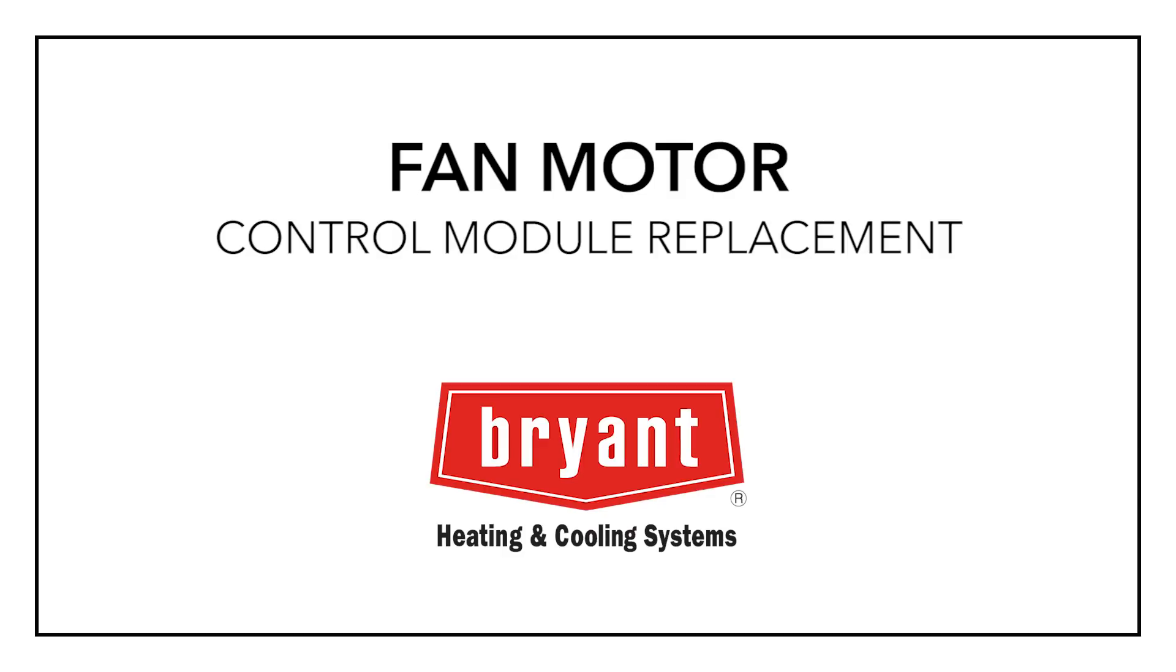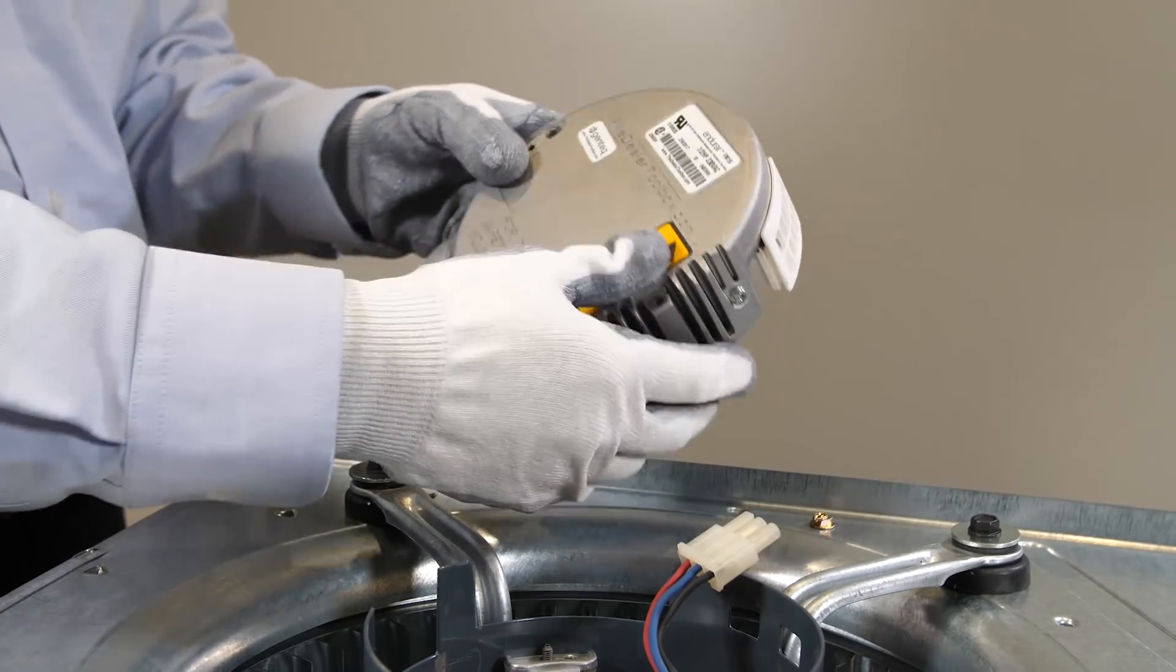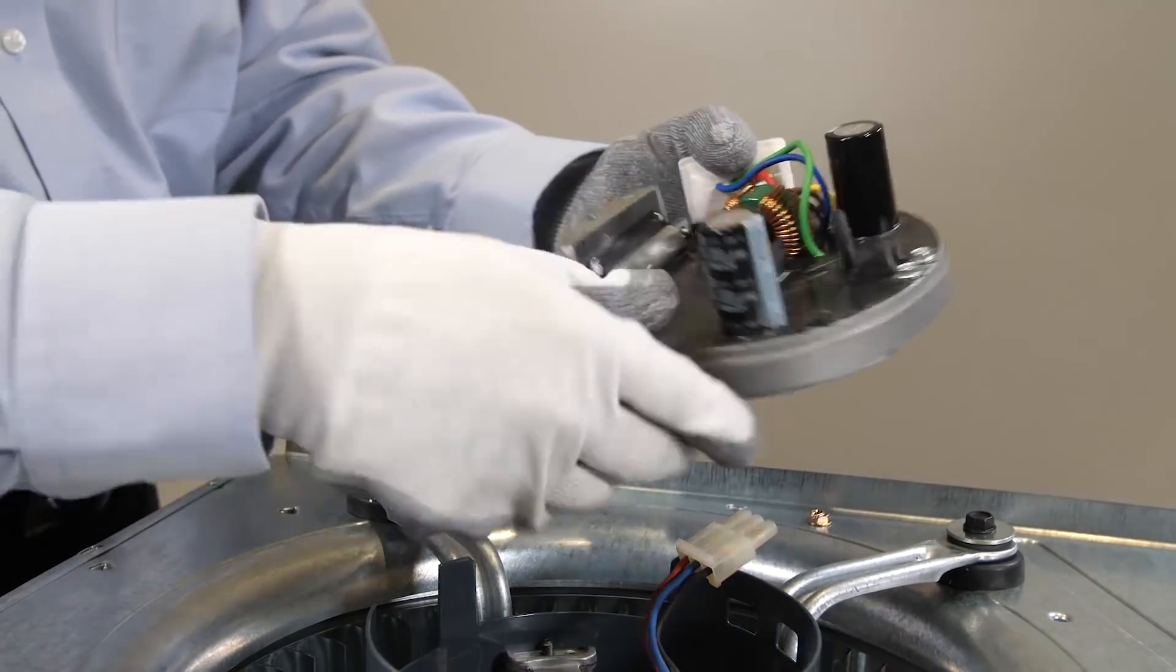To find the appropriate control module replacement part number, reference the unit model number. You could use your Service Tech app to scan the barcode on the unit.